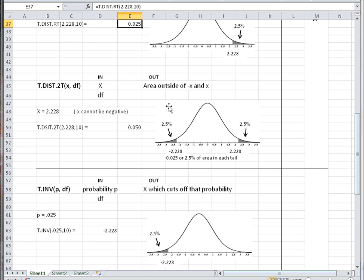The T.DIST.2T gives the area outside of a minus x and an x. The input is x and the degrees of freedom, and x cannot be negative, so the minus version is implied.